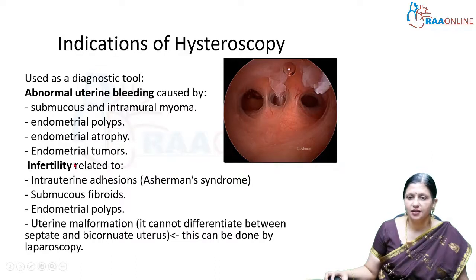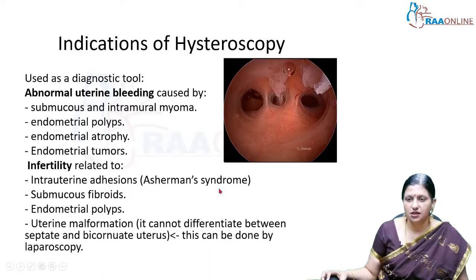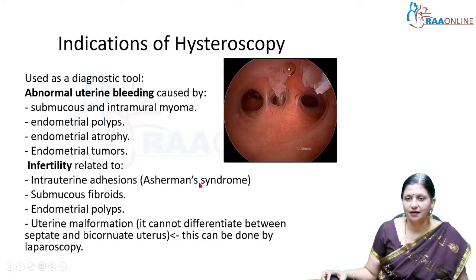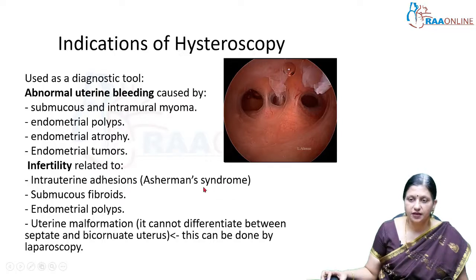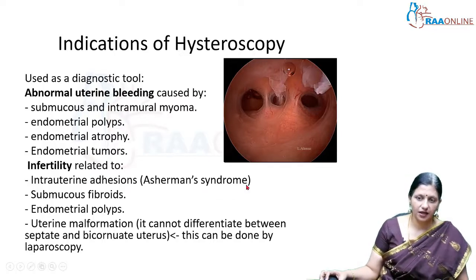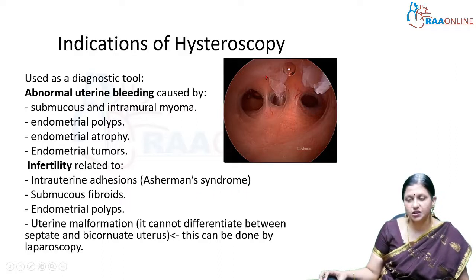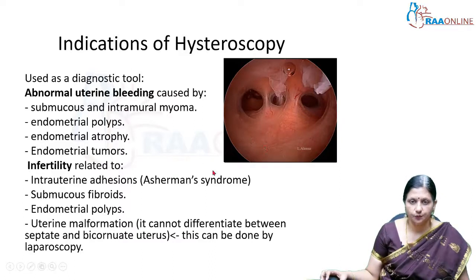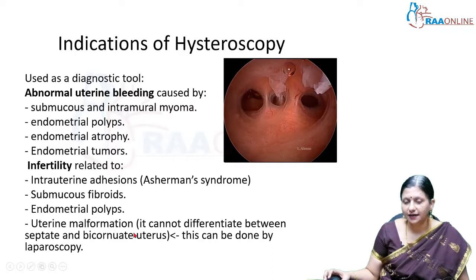Hysteroscopy is also used in infertility. It can diagnose intrauterine adhesions of Asherman syndrome, typically in a patient who has given a history of D&C done for an intended or septic abortion, following which the patient develops endometrial atrophy and fibrous adhesions. Vigorous curettage leads to hypomenorrhea and amenorrhea. These dense adhesions in the uterine cavity as evidenced by hysteroscopy are called Asherman syndrome. Submucosal fibroids, endometrial polyps, and uterine malformations can also be detected.